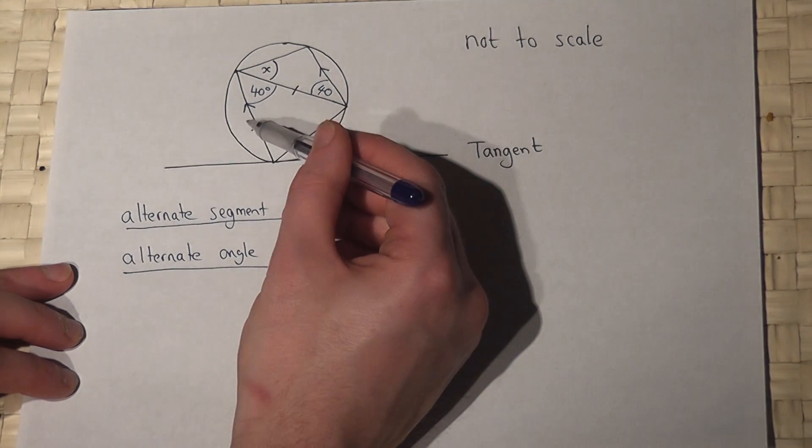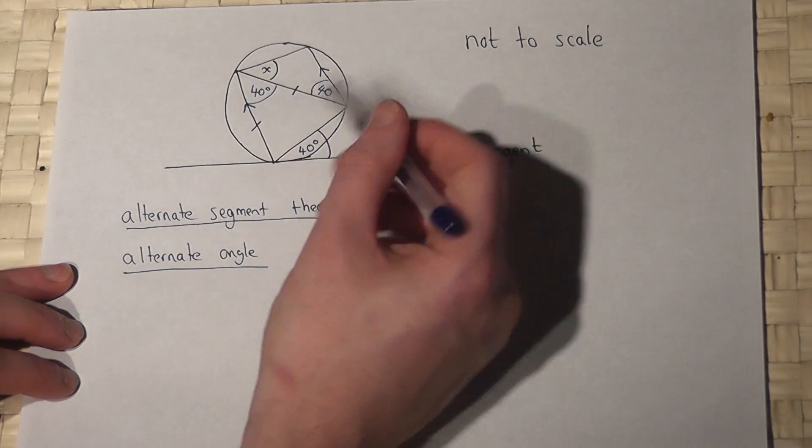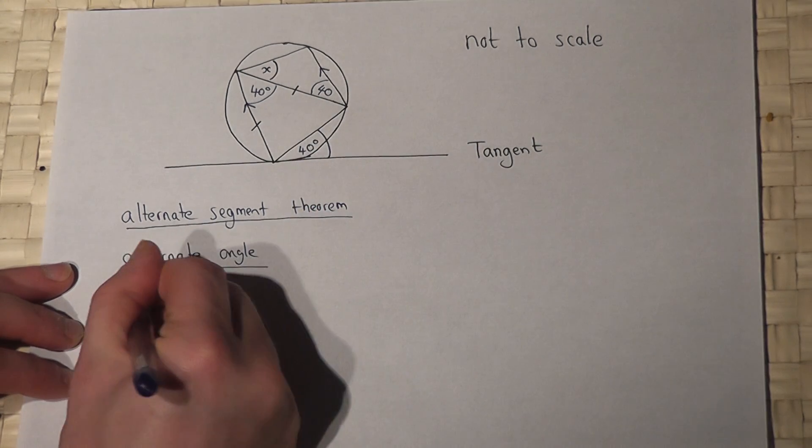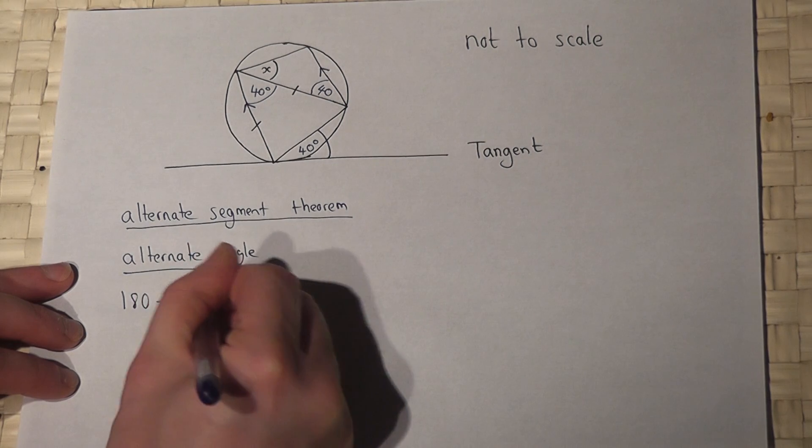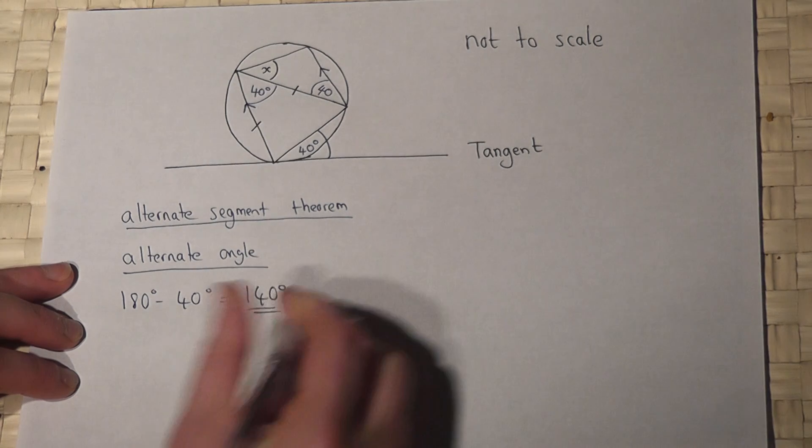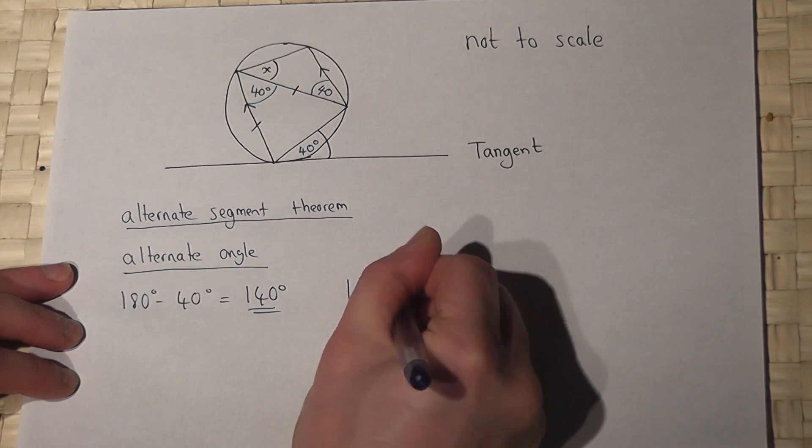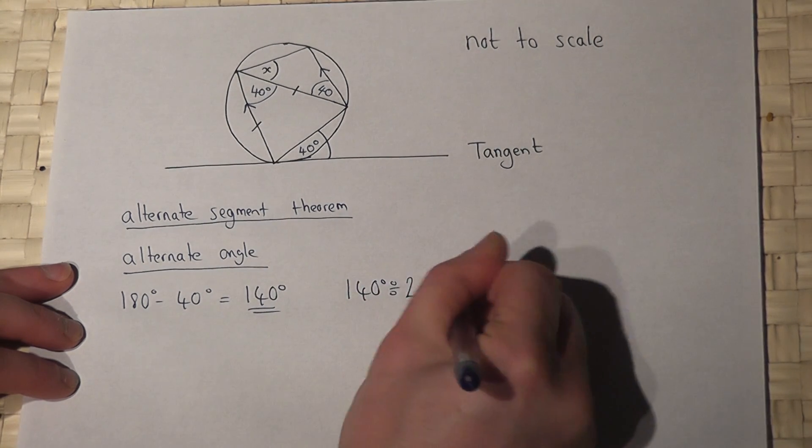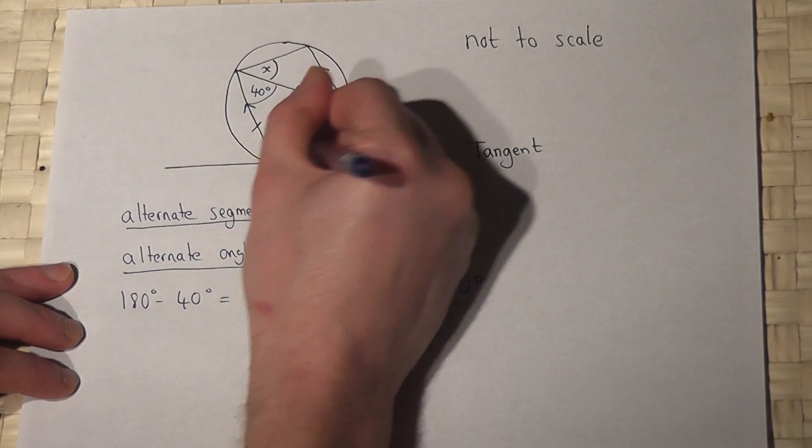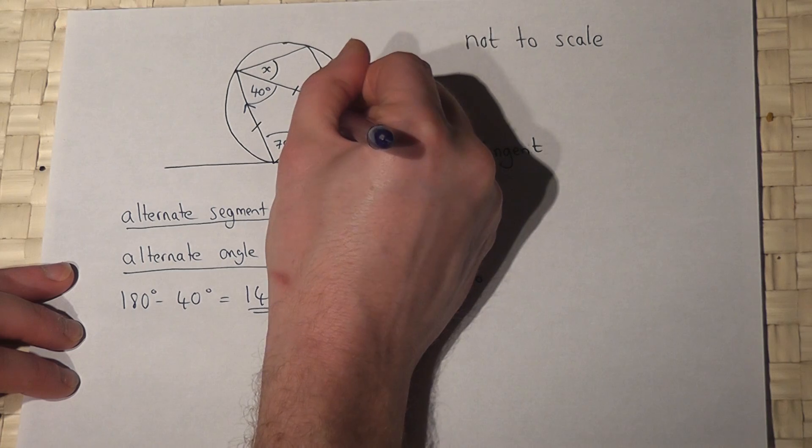These two dashes here mean that these two angles are the same. So if I do 180 take 40, because that's a triangle, I get 140 degrees. And if I then divide that by 2, I get 70. So this is 70, but also this is 70.